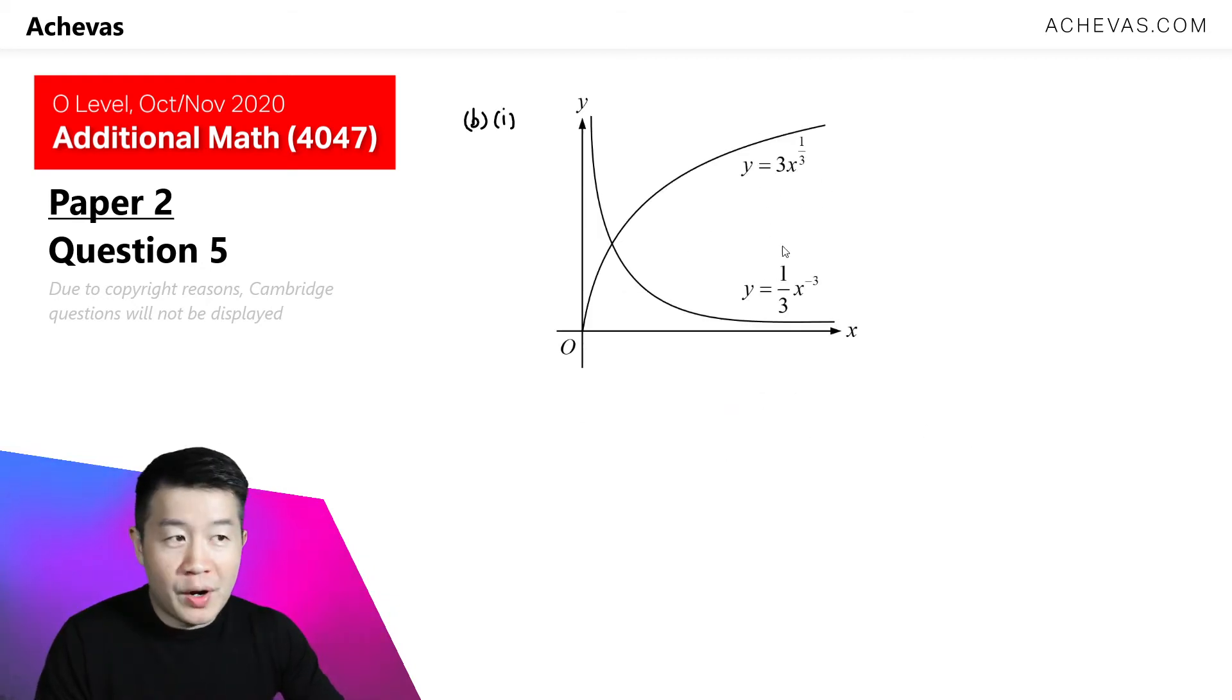We have to sketch the two graphs and I've done it here. Please take note that for this graph, there's going to be a horizontal asymptote y equals 0 and a vertical asymptote x equals 0. As for this graph here, it is starting from 0 because according to the question, x is supposed to be strictly bigger than 0.